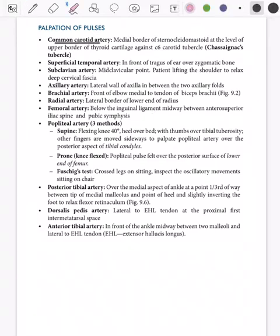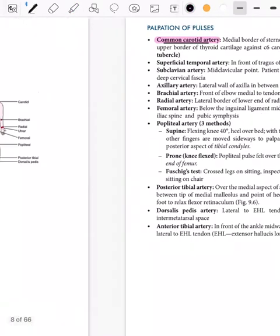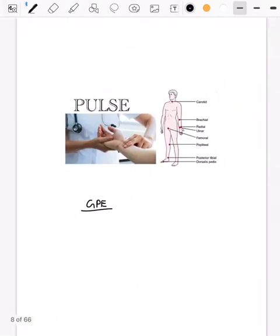First comes the common carotid artery. Whenever you want to know the pulsation, you should know the location of the artery — where are you palpating and against what structure are you palpating — because you need to palpate against something to feel the pulsation.